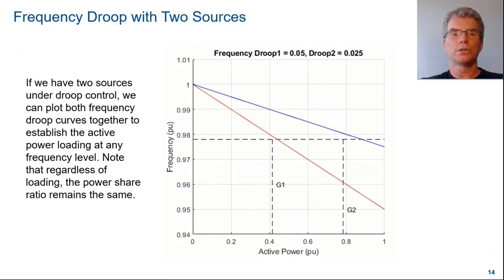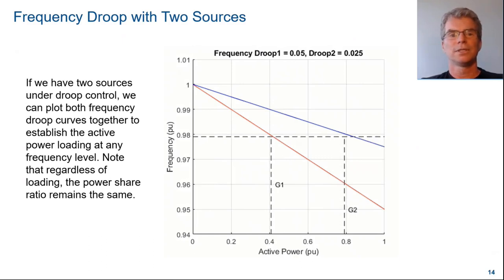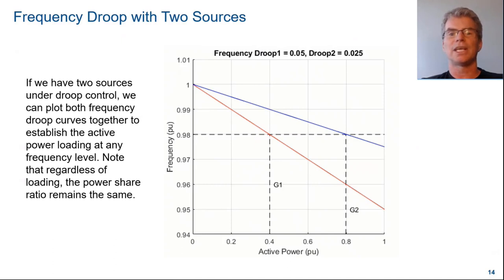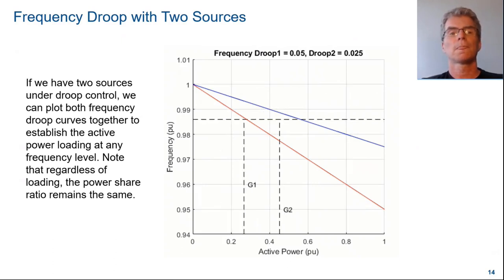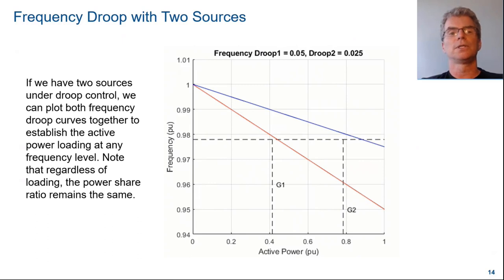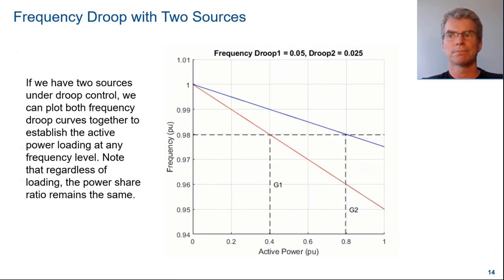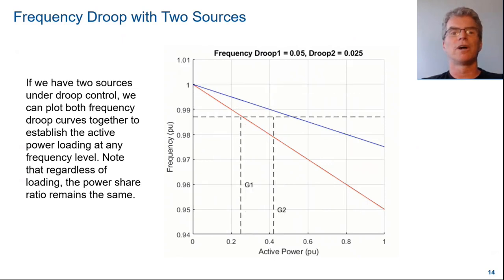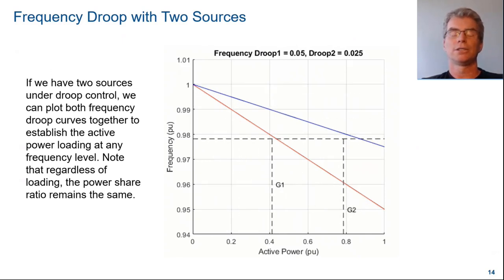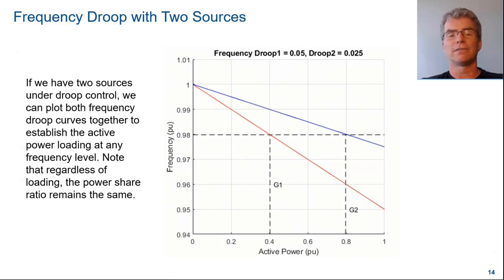If we have two sources, we can plot both frequency droop curves together to establish the active power loading at any frequency level. Note that regardless of loading, the power share ratio remains the same. In the animation shown here, generator 2 has half the droop value of generator 1, and so generator 2 provides twice the active power.